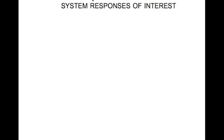Now there are a couple of system responses of interest. The first one is impulse response, which is the time history of the system's output when the input is a unit impulse and all initial conditions are zero. The impulse response of a system is its transfer function. That's one of the ways of experimentally finding out the system transfer function.